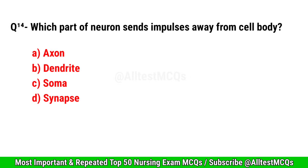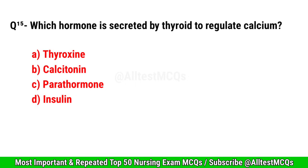Question No. 14. Which part of a neuron sends impulses away from the cell body? Correct option is A. Axon.